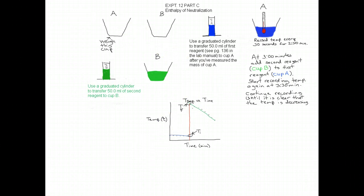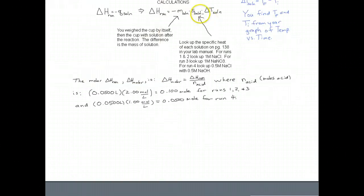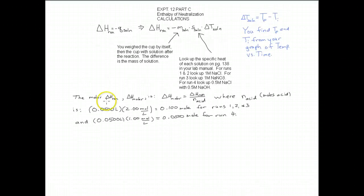Now, the calculations. The idea here is that Q of the reaction is equal to minus Q of the solution. But because this is occurring at constant pressure, Q is equal to delta H. So really, delta H of reaction, which is what we're looking for, the change in enthalpy for the reaction, is equal to minus Q of the solution. But Q of the solution is just mass of the solution times specific heat of the solution times delta T of the solution.